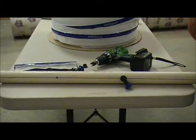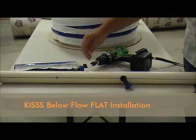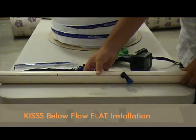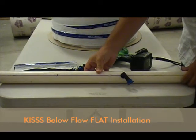KISS Below Flow Flat installation video. First things first, you need to have your PVC pipe at least one and a quarter inches.